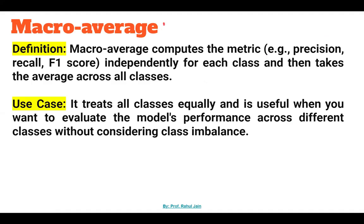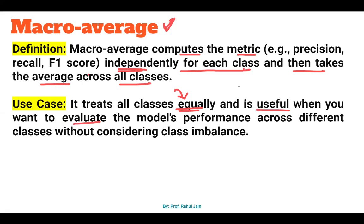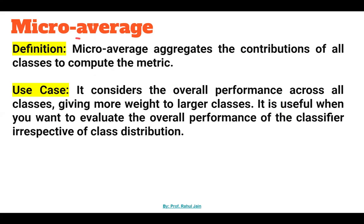In macro average, the metric — that is precision, recall, and F1 score — is computed for each class independently and then the average is taken across all classes. In macro average, each class is treated equally, and it is useful when you want to evaluate the model's performance across different classes without considering class imbalance.